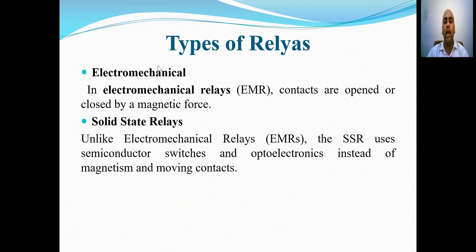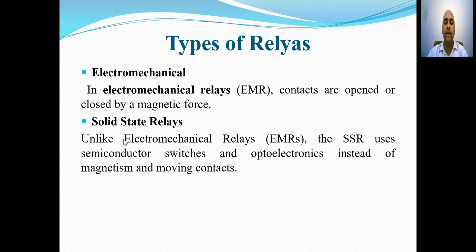There are generally two types of relays: electromechanical and solid-state relays. In electromechanical relays, the contacts are opened or closed by a magnetic force. In solid-state relays, semiconductor switches and optoelectronics are used instead of magnetism and moving contacts to make or break the contact.